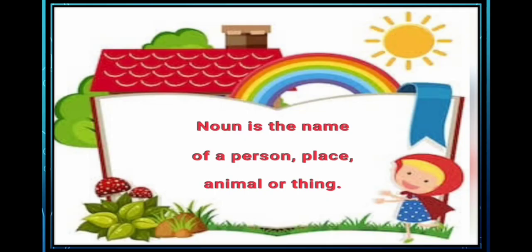Now, what is Noun? A Noun is the name of a person, place, animal or a thing. So what do we understand by this? We mean that name of a person, name of a place, name of an animal or name of a thing is said to be a noun. In simple words, we can say naming words are called Noun. For example, if your name is Ria, then your name is a noun.